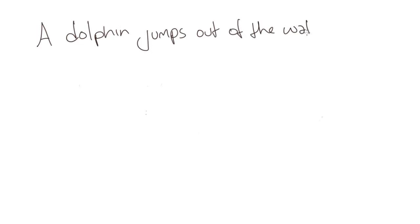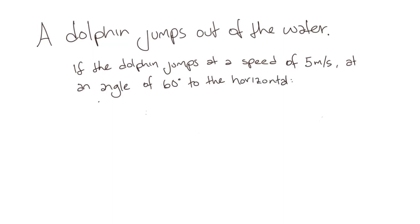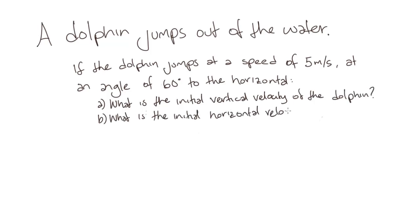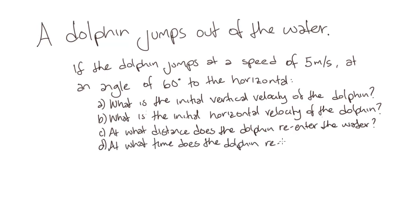A dolphin jumps out of the water. If the dolphin jumps at a speed of 5m per second and at an angle of 60 degrees to the horizontal: A. What is the initial vertical velocity of the dolphin? B. What is the initial horizontal velocity of the dolphin? C. At what distance does the dolphin re-enter the water? D. At what time does the dolphin re-enter the water? And E. What is the maximum height reached by the dolphin?